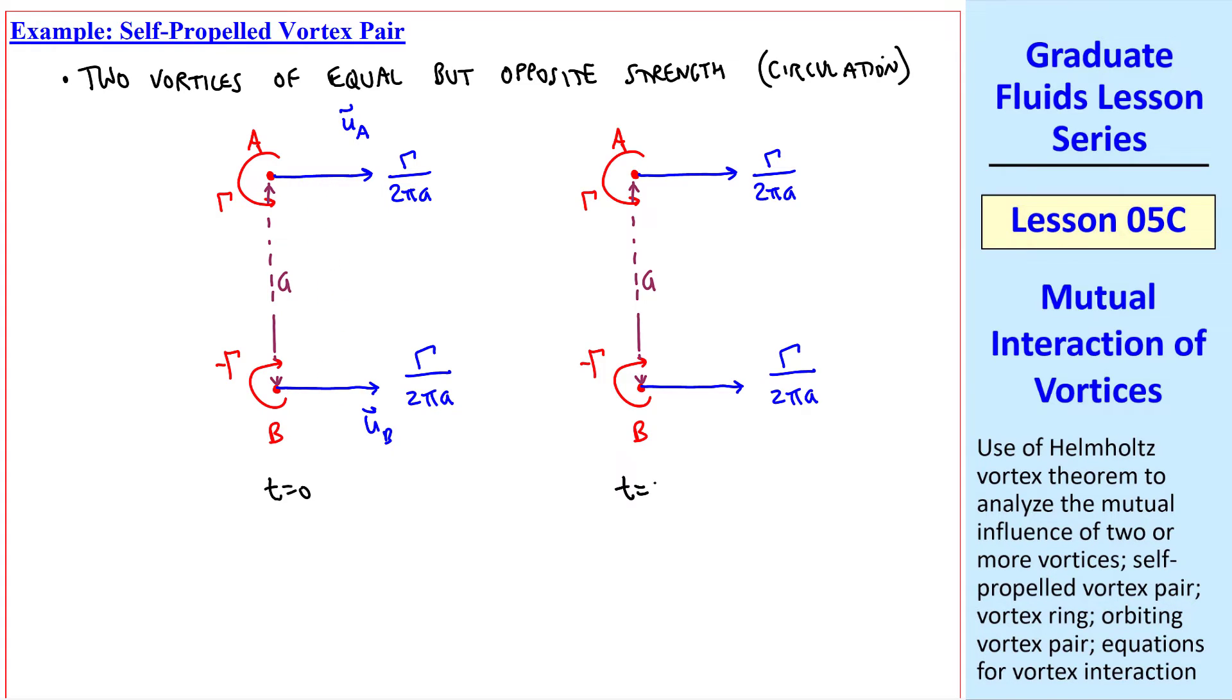At some later time, delta T, I copied and pasted, because these two vortices will just move to the right. They'll stay the same distance apart, since there's no component of velocity towards each other or away from each other. Theoretically, they move at this constant speed, gamma over 2 pi A, together as a self-propelled vortex pair.